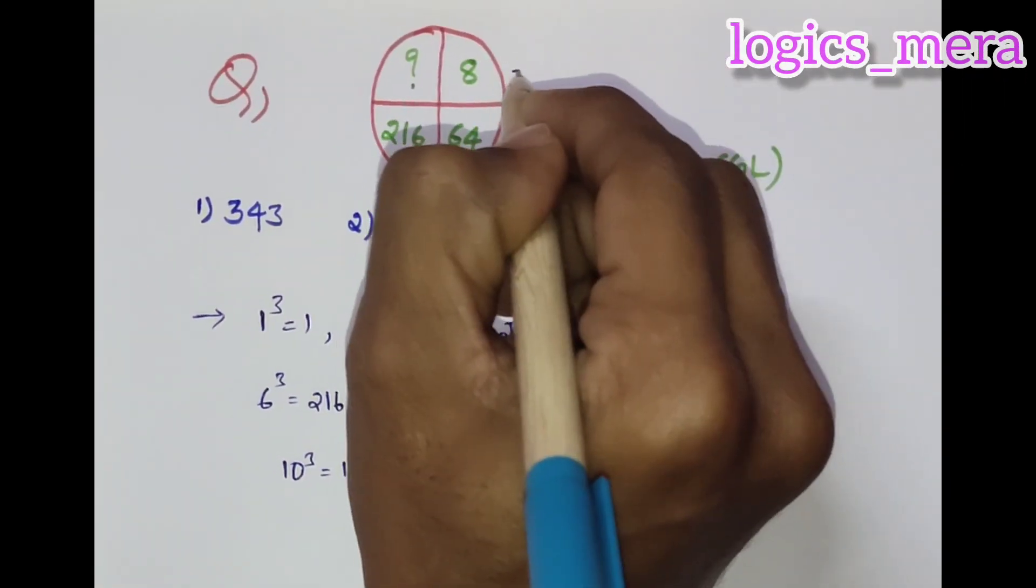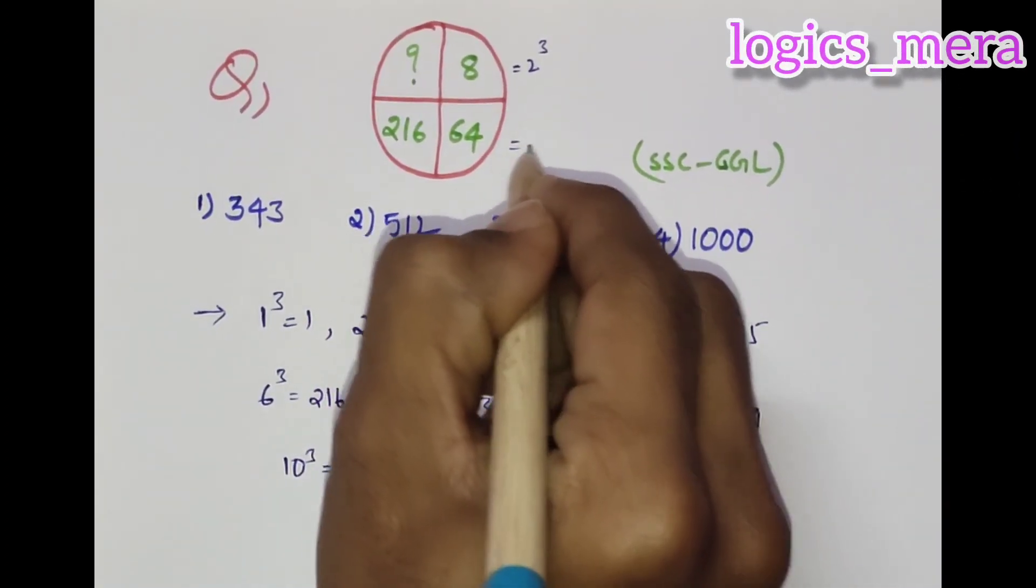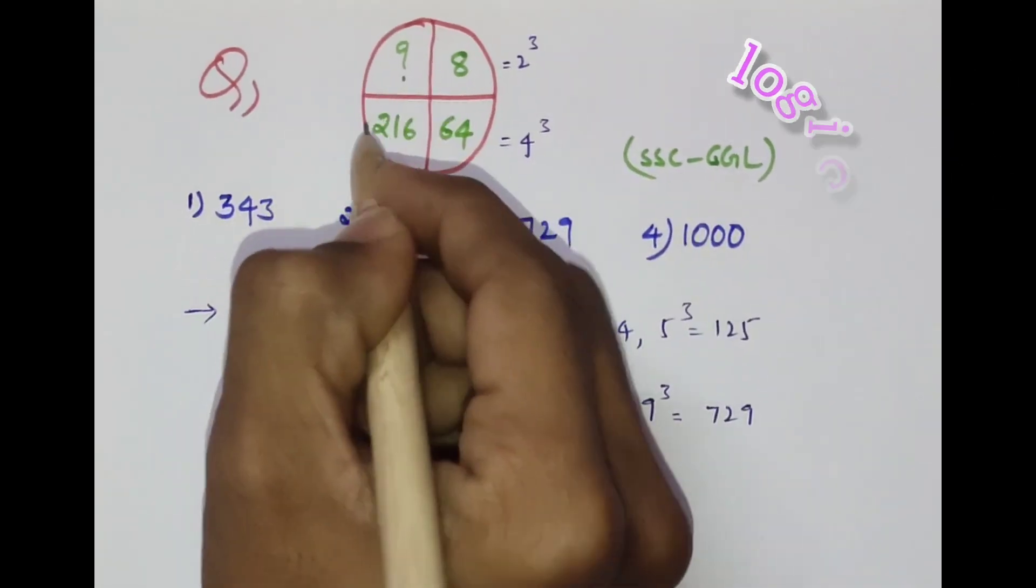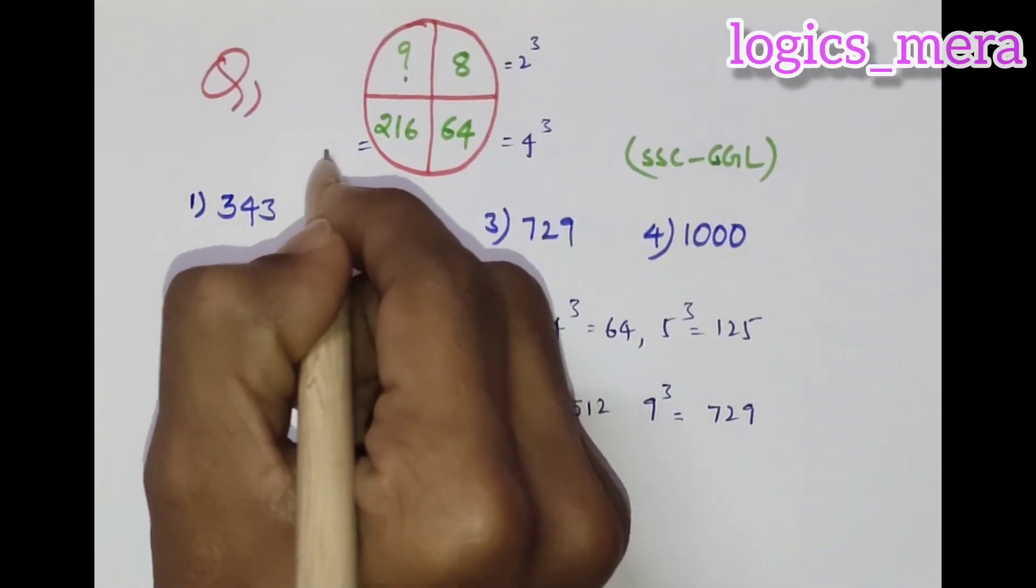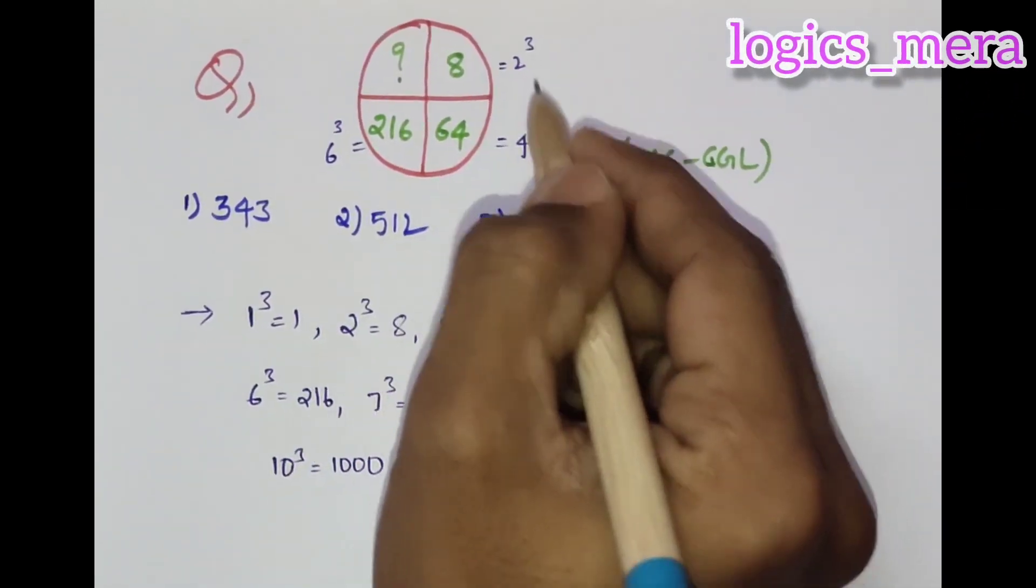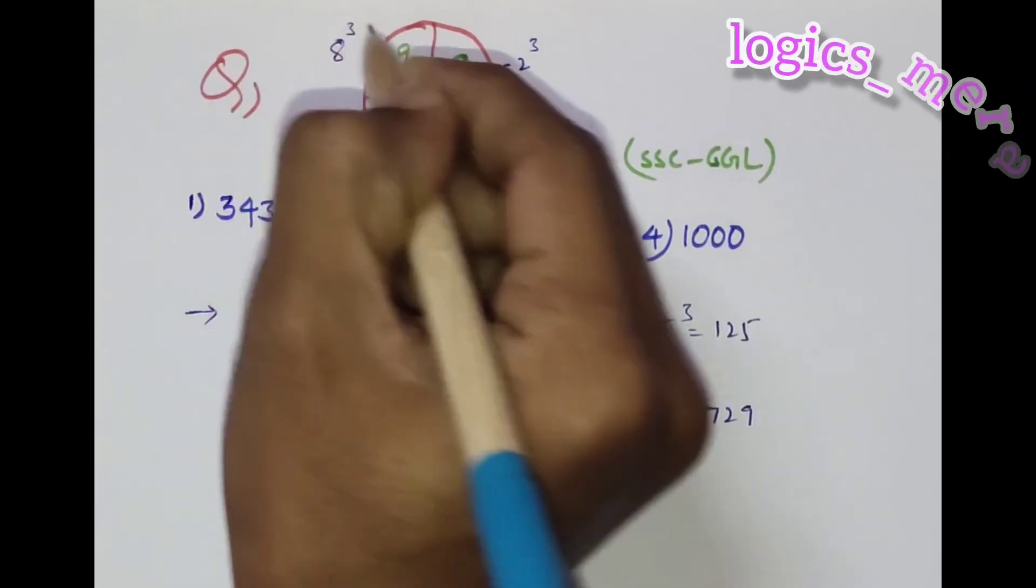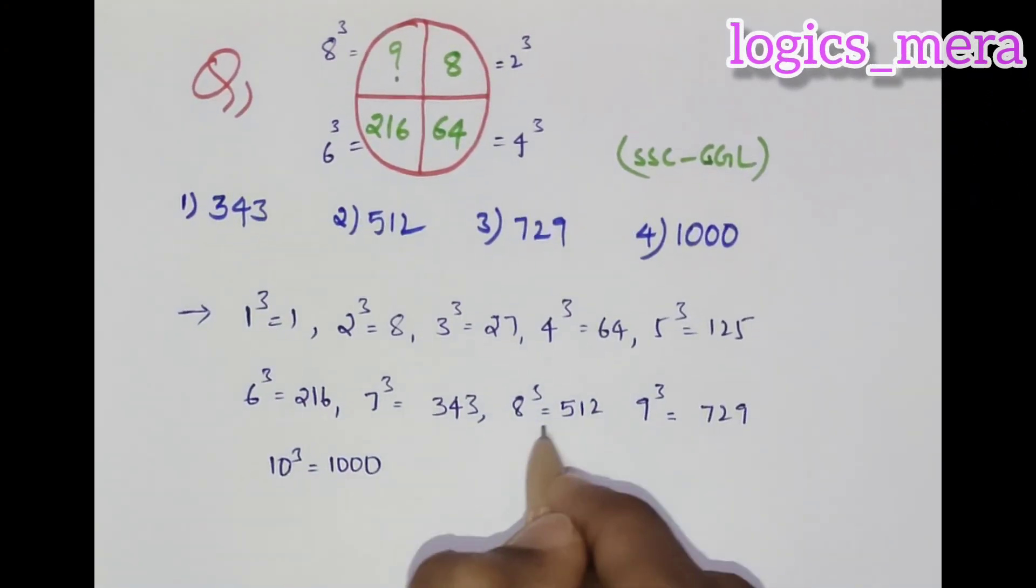If you find out the relationship: eight is two cube, sixty-four we can write as four cube, and two hundred and sixteen we can write as six cube. So if you understand the relationship between these, two, four, six, and of course it is eight cube.